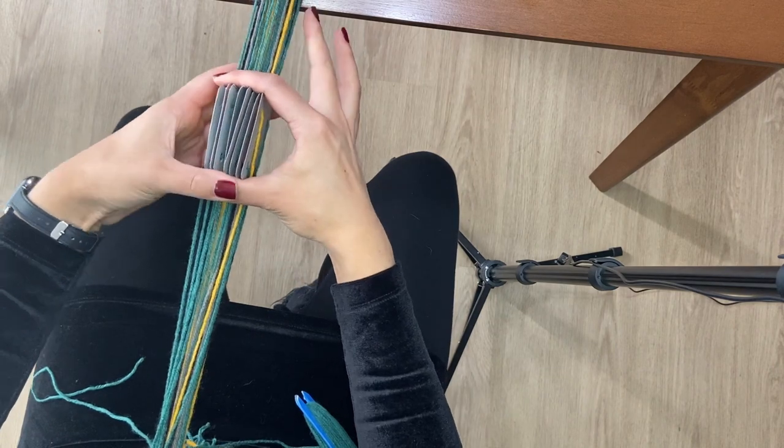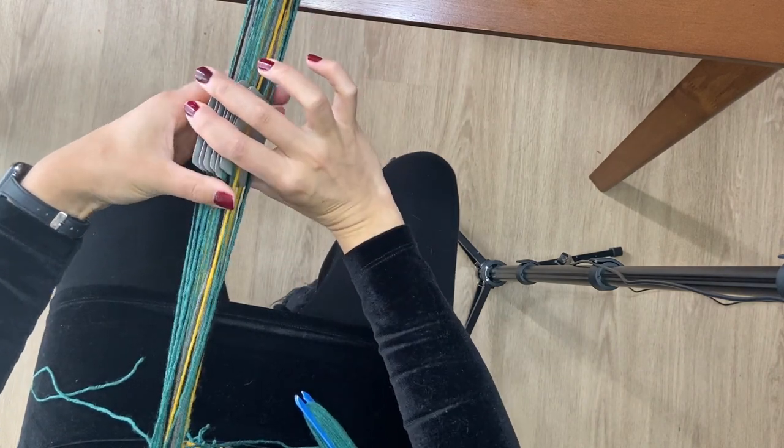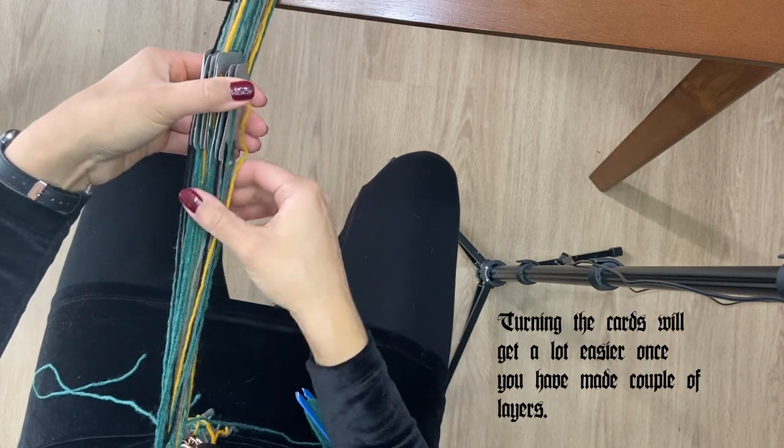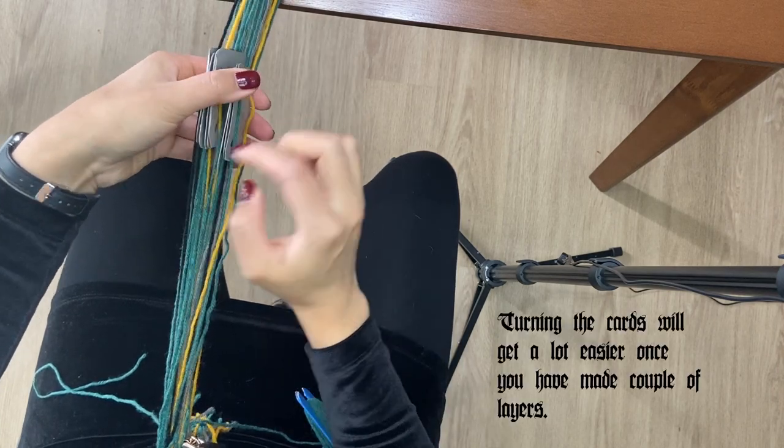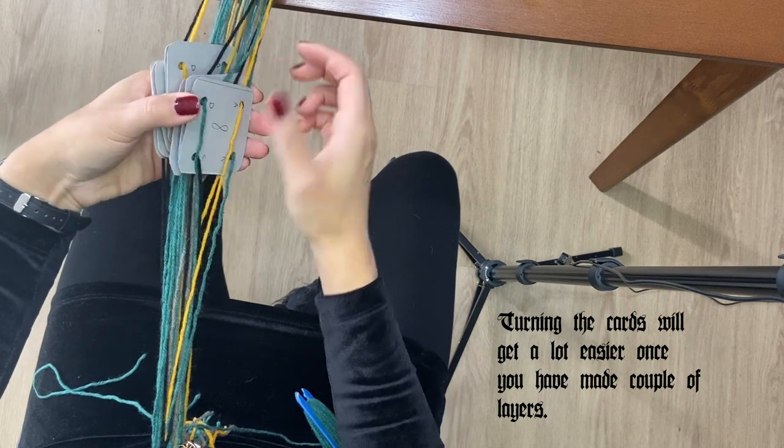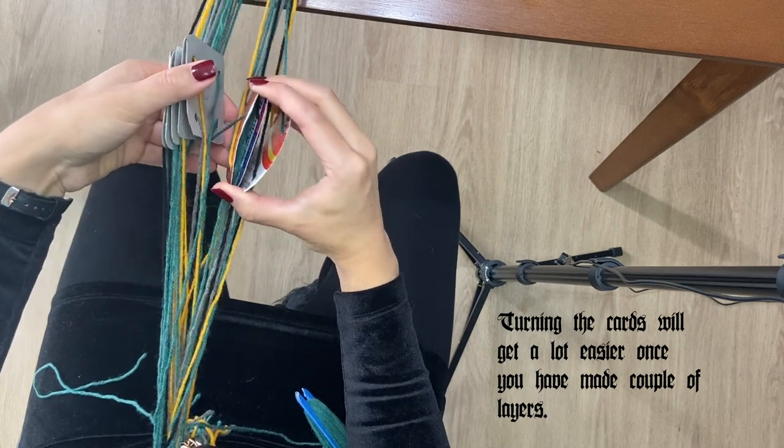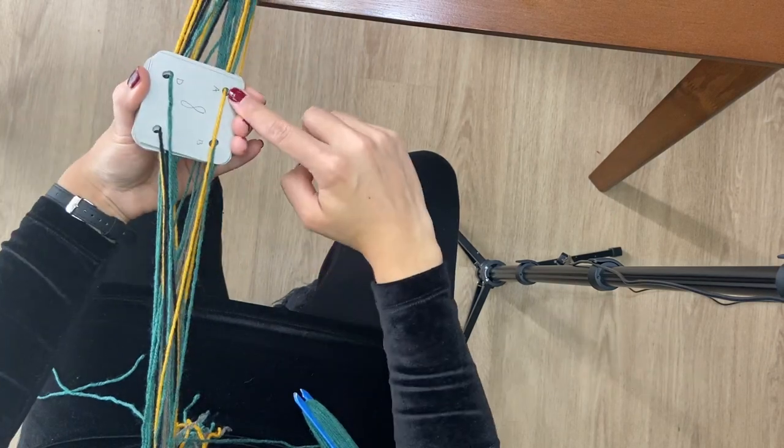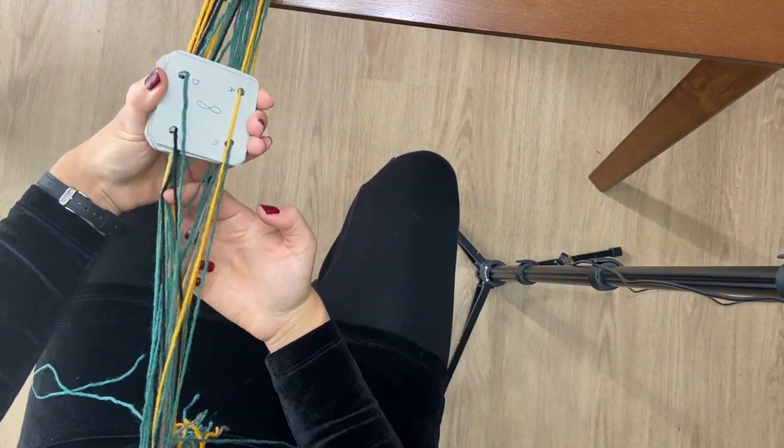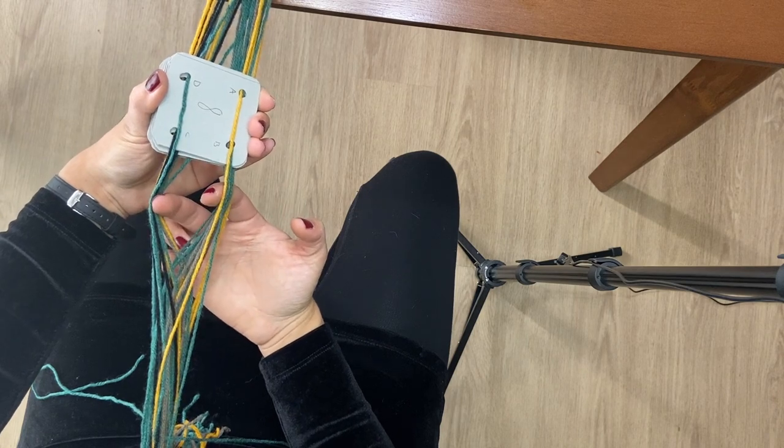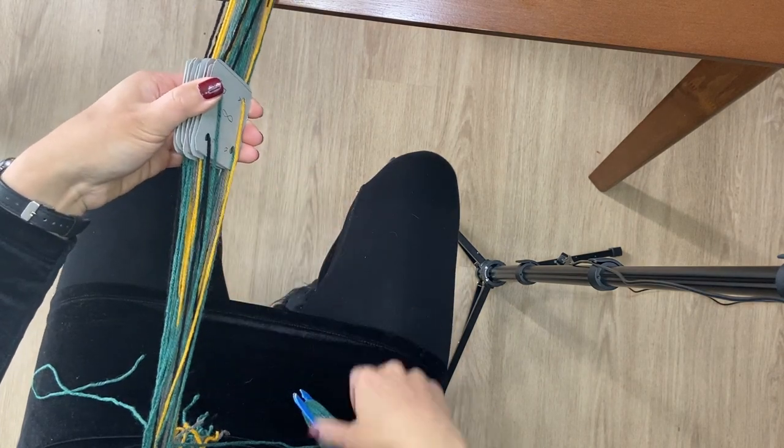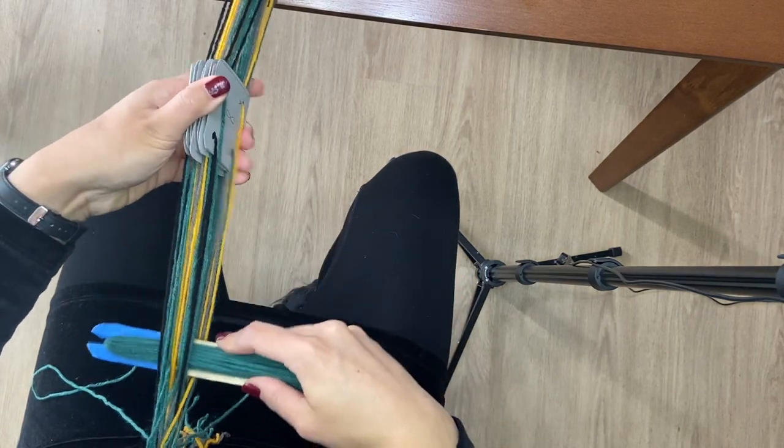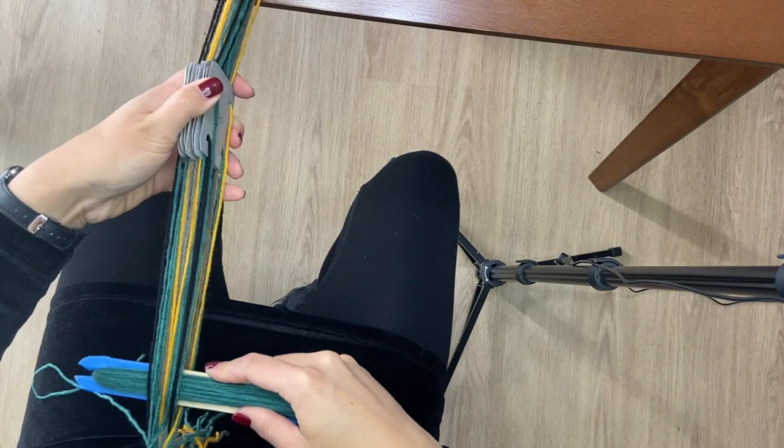Then we turn the cards away from us so that the letters move forward once. When you look at the shed from the side you can see that we have created a twist in it. Take your shuttle and loop it through the newly created space and push that twist backwards to lock the weave in.